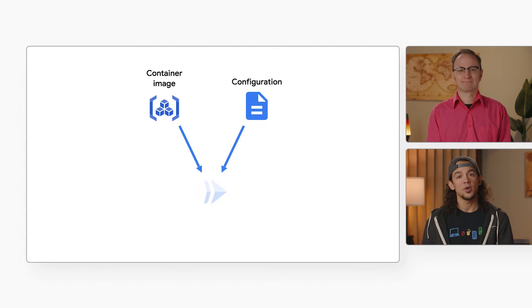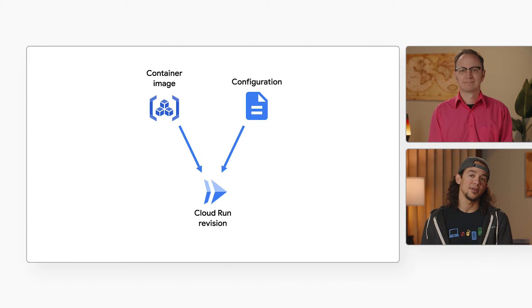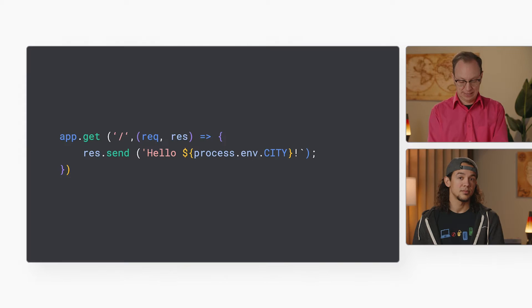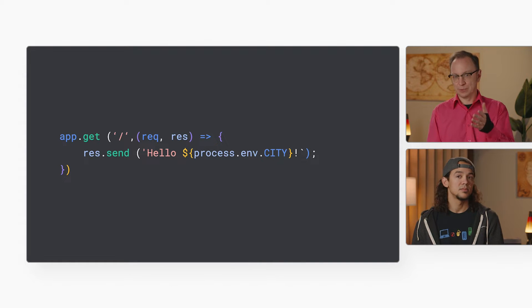I see that a service here has one revision — there can be many. What exactly is a revision, Roger? Well, when you deploy a new container image to Cloud Run or change the configuration of an existing service, an immutable revision is created. The revision includes what container image the service should use and any configurations that you specify, like defining values for your service's environment variables. The Cloud Run service we deployed does display the value of the city environment variable, and that's what we saw a minute ago when we hit the service's URL.